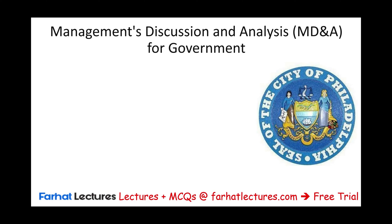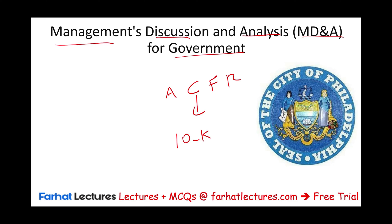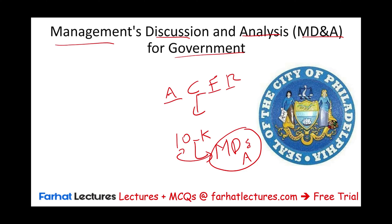Hello and welcome to the session in which we will discuss management discussion and analysis — MD&A — for government. The MD&A is found in the annual comprehensive financial report. This is similar to the 10-K for for-profit businesses. For-profit businesses issue their 10-Ks annually and they do have MD&A, so MD&A for government will be found in the annual comprehensive financial report.